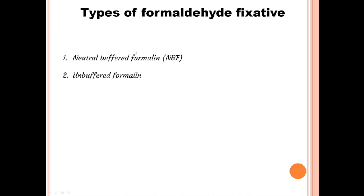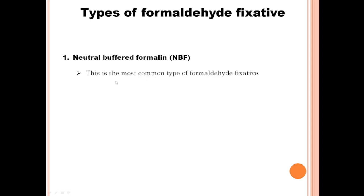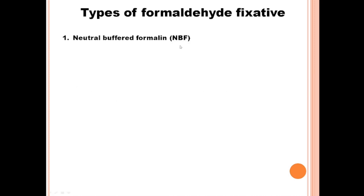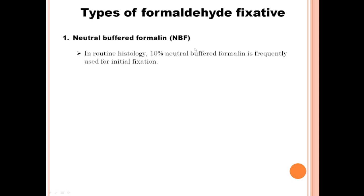Formalin may be used in two forms: neutral buffered formalin and unbuffered formalin. Neutral buffered formalin is the most widely used fixative and the most common type of formaldehyde fixative. It is buffered to maintain a neutral pH, which helps to prevent the formation of artifacts. For routine histology, 10% neutral buffered formalin is frequently used for initial fixation and for the first station on tissue processing.